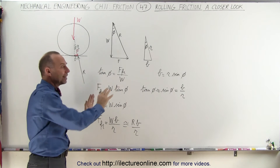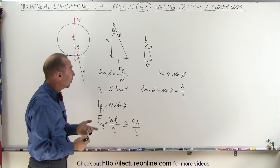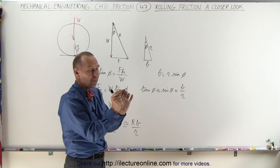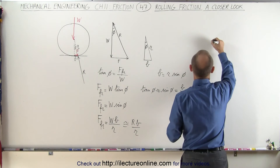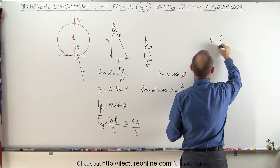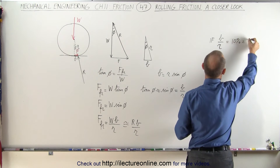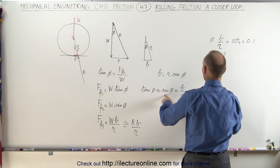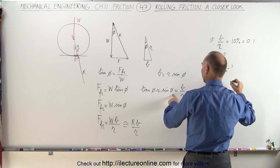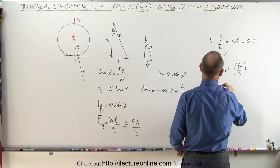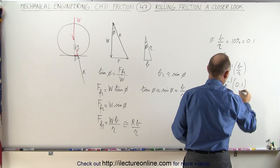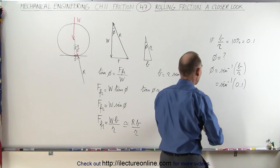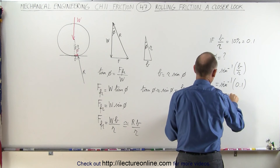To show why the angles are small, let's say that b is 10% of r — which would be unusual, as not many wheels have b that large relative to r. If b divided by r equals 0.1, what would the angle be? We can say that phi equals the arcsine of b over r, which is the arcsine of 0.1. Taking the inverse sine of 0.1, we get an angle of 5.74 degrees. So phi equals 5.74 degrees.